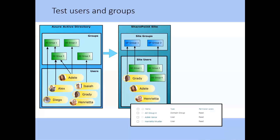This diagram shows the users and security groups defined in my Azure AD for my tenant. The arrows indicate that Diego, Alex, Adele, and Isaiah are members of Azure AD security groups. Within the same tenant on my demo SharePoint site, I have defined two SharePoint site groups, SP Group 1 and SP Group 2. Grady, AD Group 1, and AD Group 2 have been assigned as members of those site groups, causing creation of their corresponding site users. Adele, Henrietta, and AD Group 4 have been assigned read permissions on the site directly, causing creation of their corresponding site users. Note that Alex, Diego, and Isaiah do not have corresponding SharePoint site users — their only relation to the SharePoint site is through their AD Group memberships of AD Group 1 and AD Group 4.